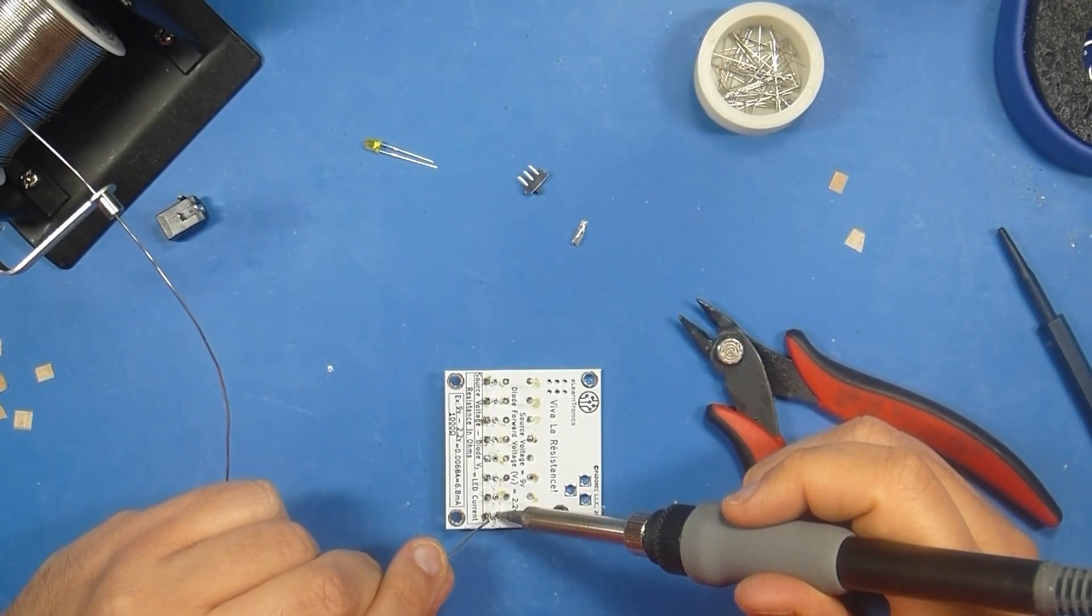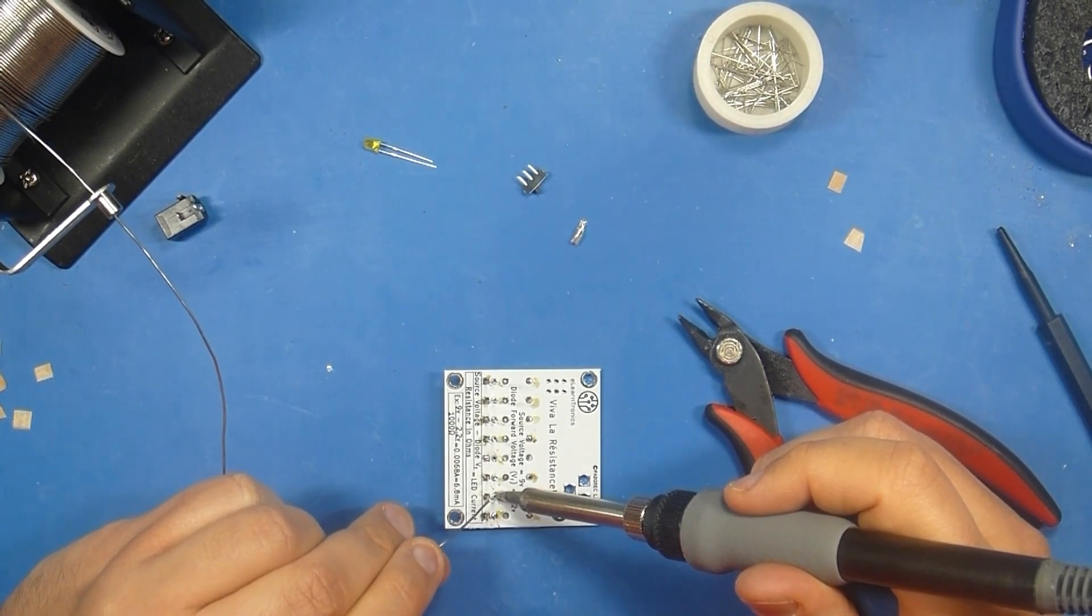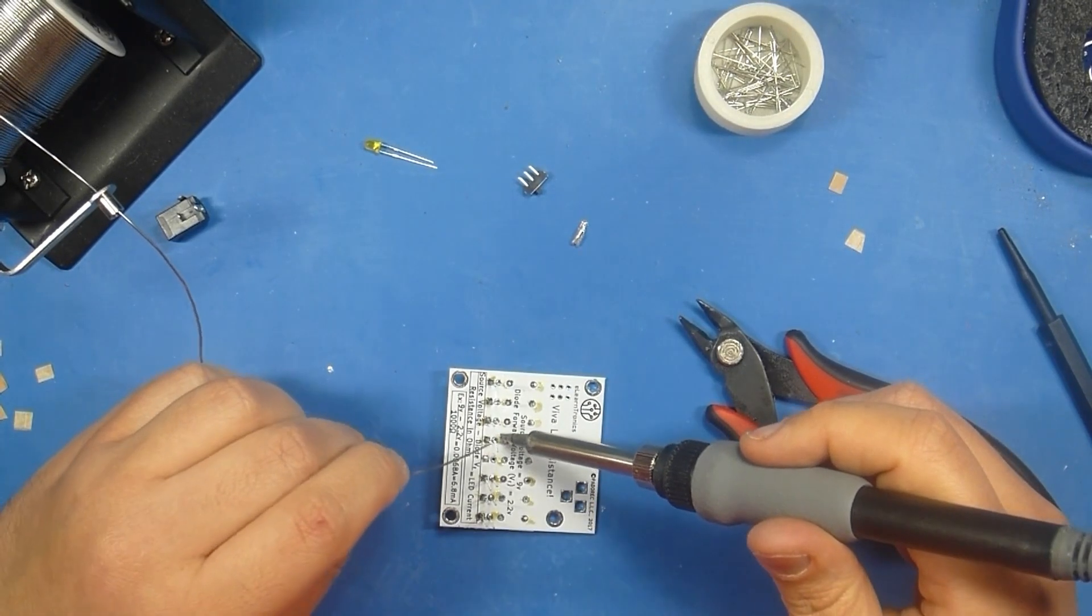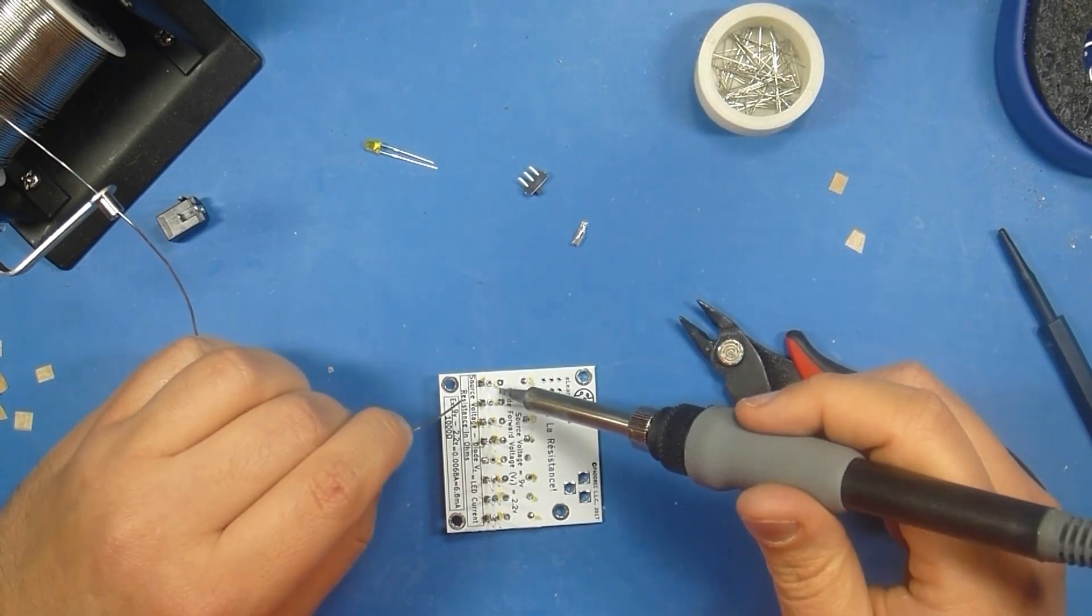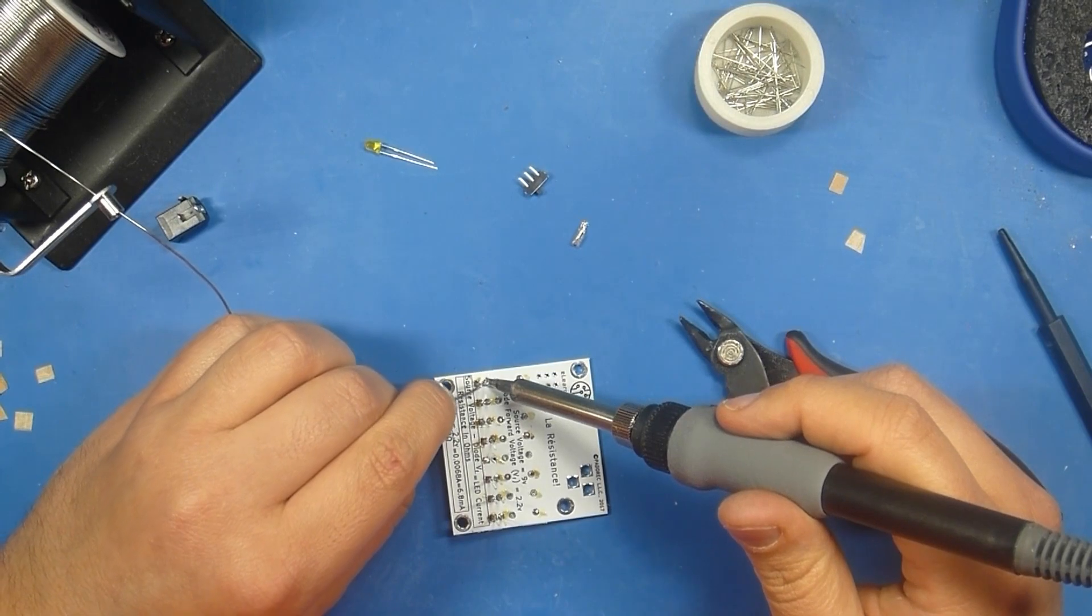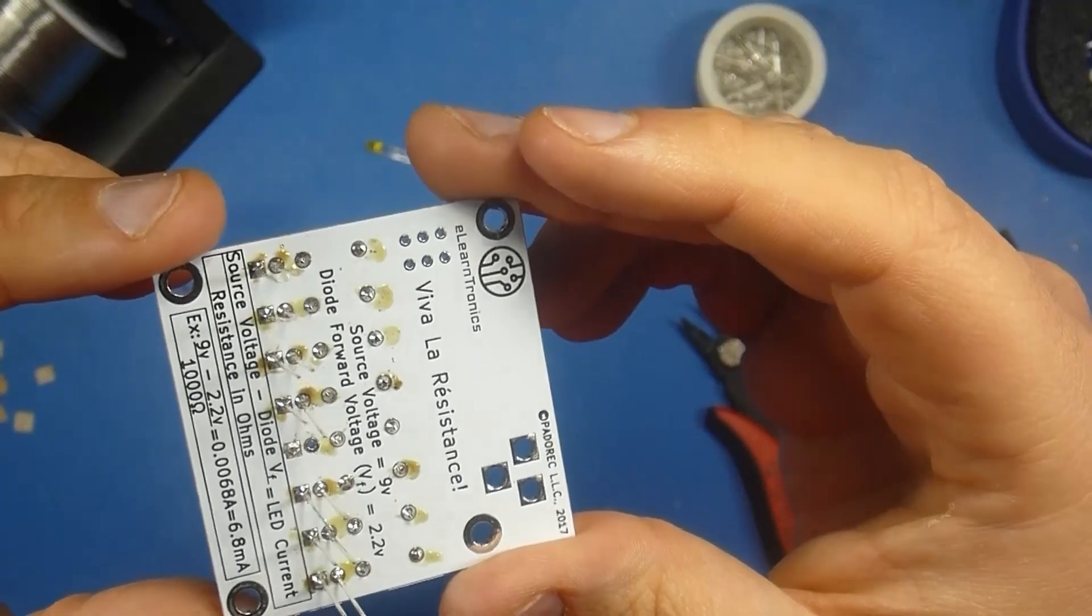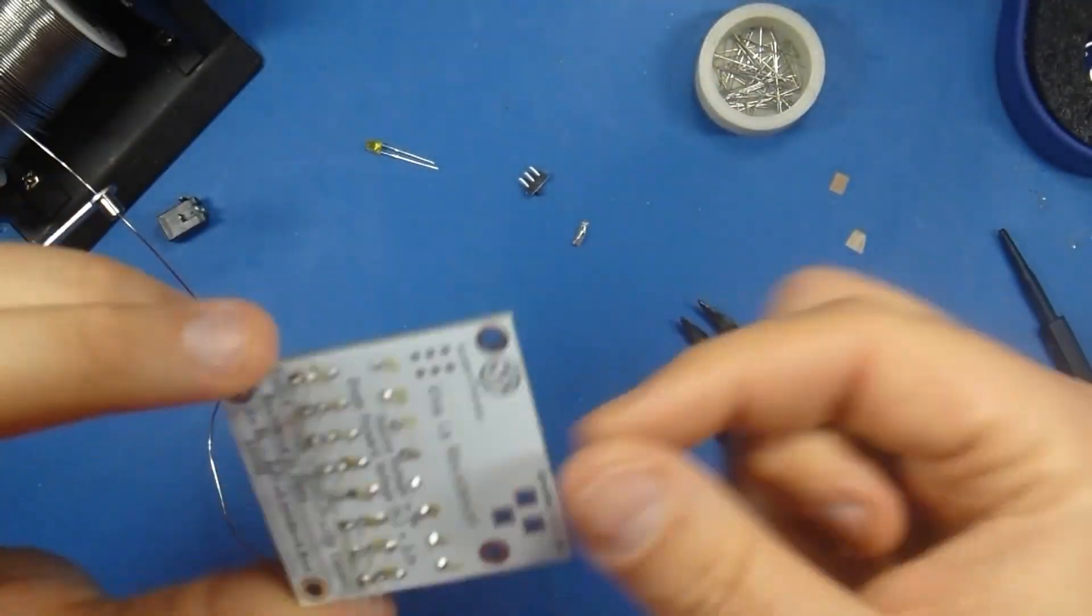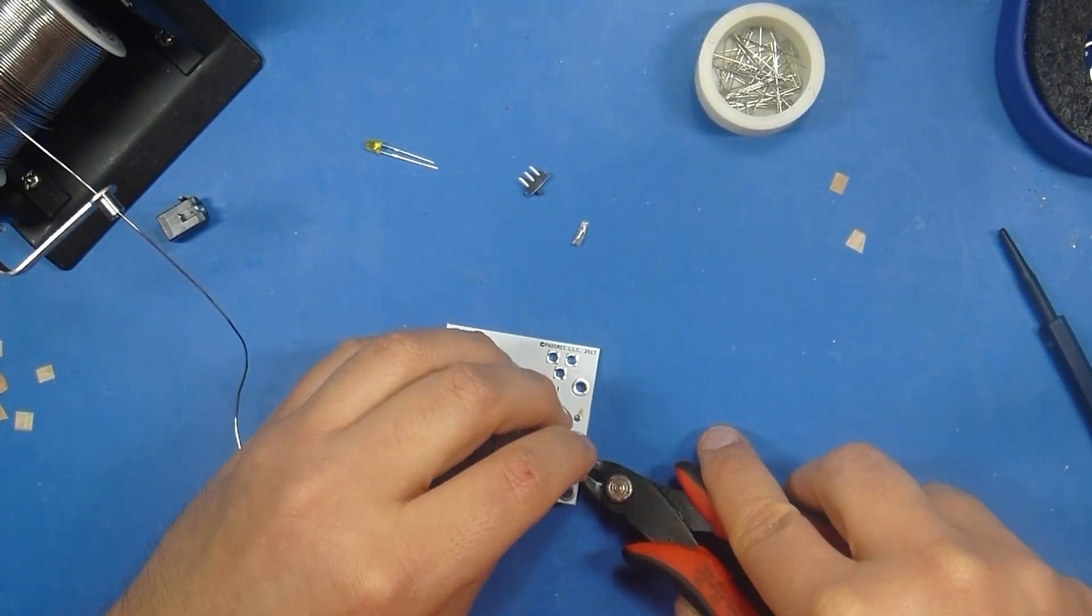Once you're happy that all of your LEDs are straight, you can come through and re-solder all of the other leads, which will effectively complete the soldering job and completely lock the LED into place. If you need to remove it, you theoretically can, but it's much more difficult to do so when you have to reflow two or more leads at one time. Inspect your solder joints. And when you're ready, come through and clip your leads.